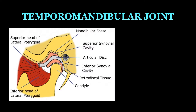Now let us understand the basics about the temporomandibular joint. The area where the cranio and mandibular articulation occurs is called the temporomandibular joint. It is also called a bilateral diarthroidal joint, atypical synovial joint, ginglimo-arthroidal joint, and compound joint.